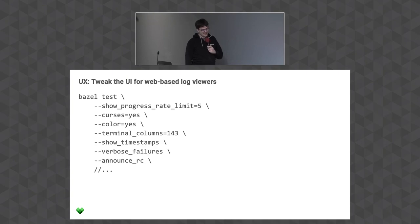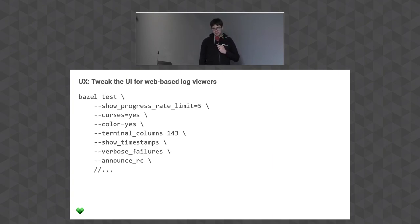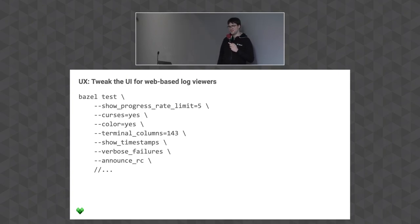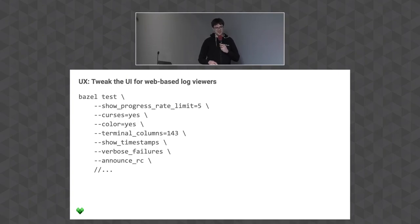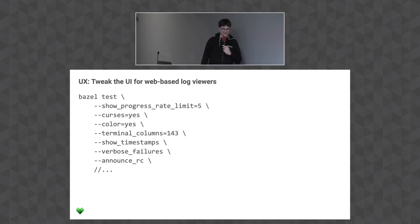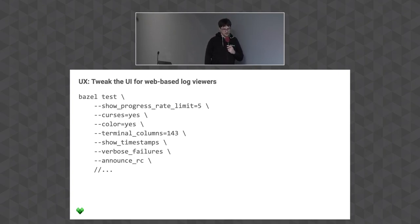The --announce_rc flag is also nice because it prints on startup which .bazelrc files Bazel parses. If a developer helpfully checks in a project-specific .bazelrc into their repository, the CI will also use it. If that contains things like --disk_cache, it will completely mess up your CI because it's meant for a developer workstation, not a VM. At least with this flag you know it loaded that file and can apply countermeasures.